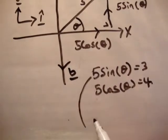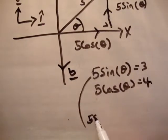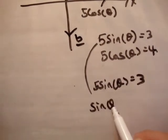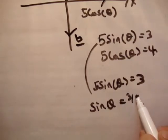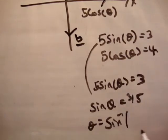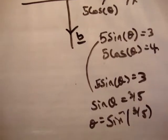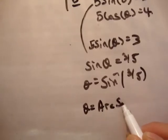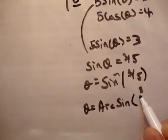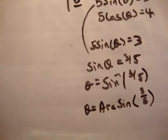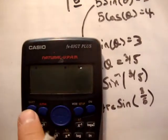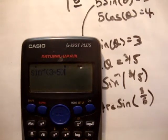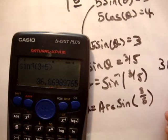So we go 5 sine of theta equals 3, sine theta equals 3 fifths, theta equals inverse sine of 3 fifths. You should know that inverse sine is the same thing as arc sine. Let's have a look. Press shift, sine for inverse sine, 3 divided by 5 gives you an angle of 36 degrees. Note that for a second.